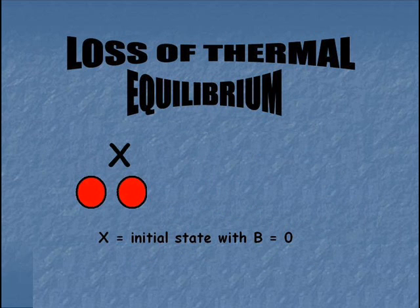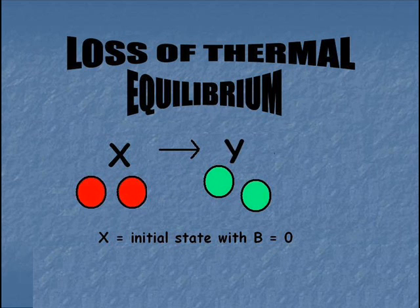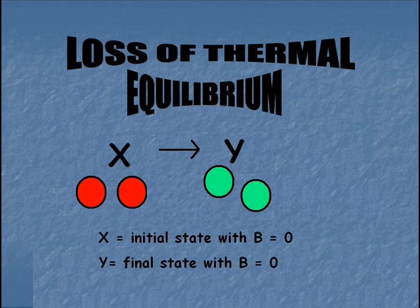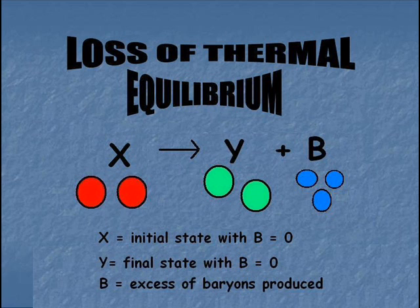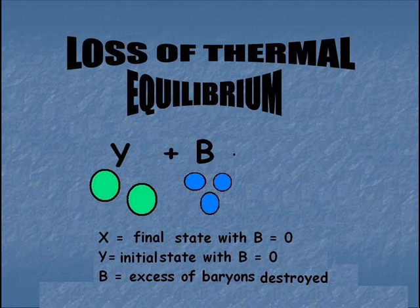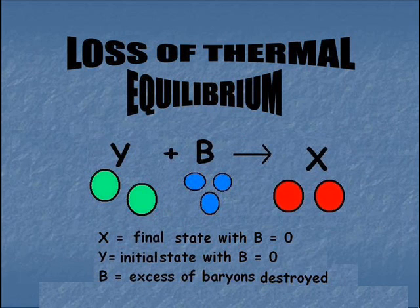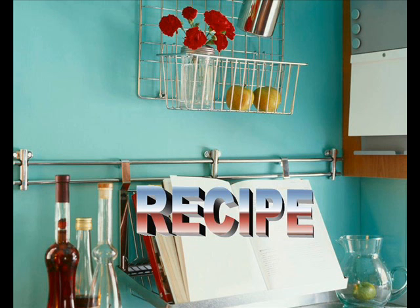For example, consider the hypothetical case when a particle X at some initial state with vanishing baryon number decays into a particle Y that also has a baryon number B equal to 0, and represents the excess baryons produced by the number B. If this process is in thermal equilibrium, then by definition, the rate for the inverse process Y plus B decays into X is equal to the rate that we had previously. However, no net baryon asymmetry can be produced since the inverse process destroys B as fast as the previous process creates it.